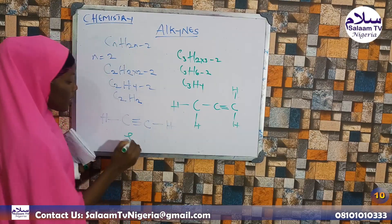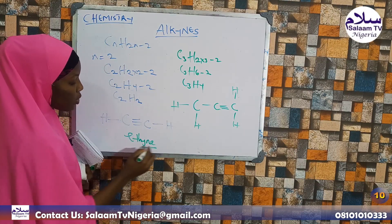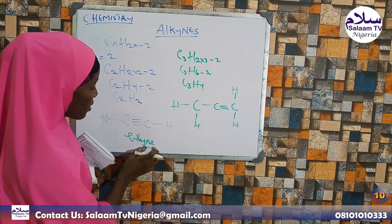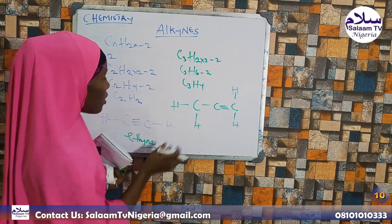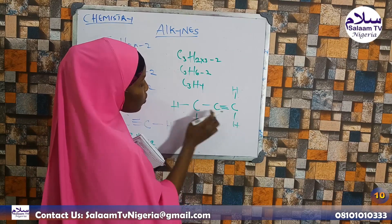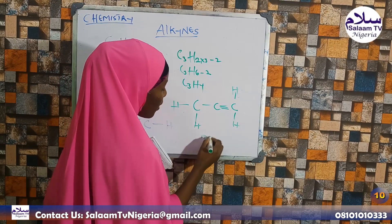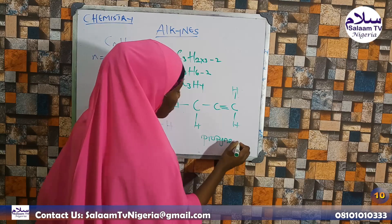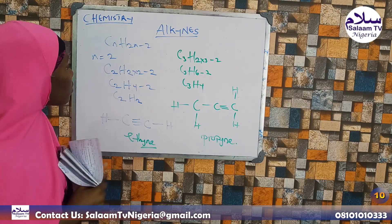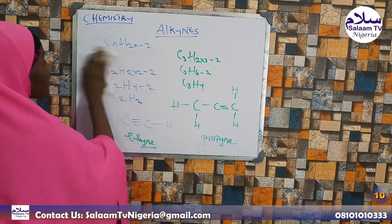So the name for alkynes uses the suffix '-yne'. The numbering goes 1, 2, 3, 4. For example, with 3 carbons we get propyne. That is the name when we have a triple bond in a 3-carbon chain.